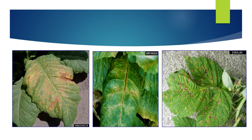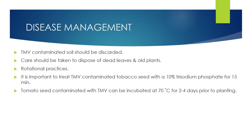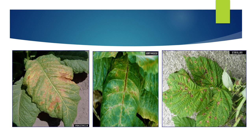These are all leaves infected with tobacco mosaic virus. Here we can see the light and dark green and yellow patches on the leaf. Moving on to control and disease management.